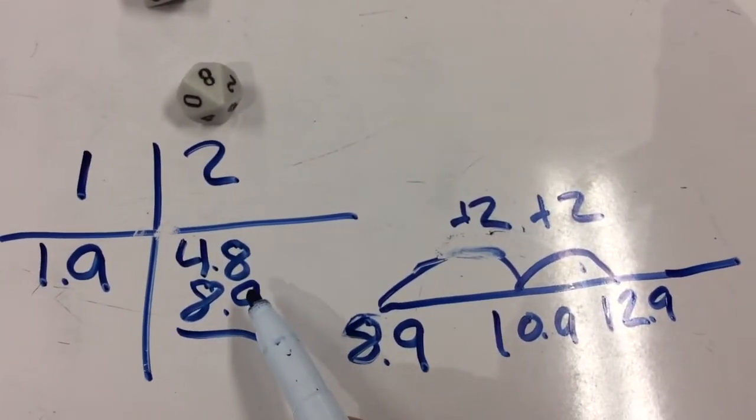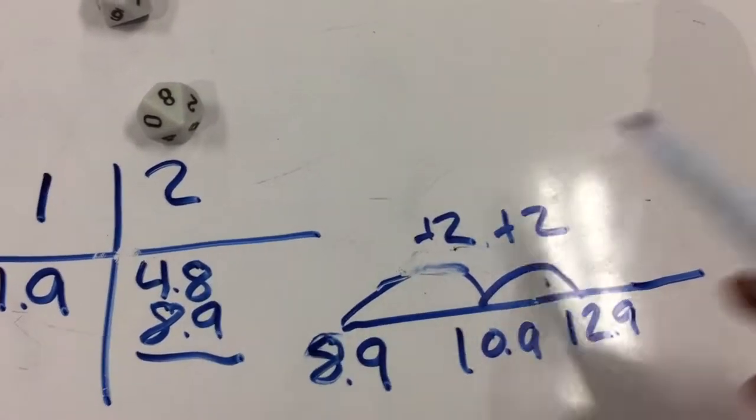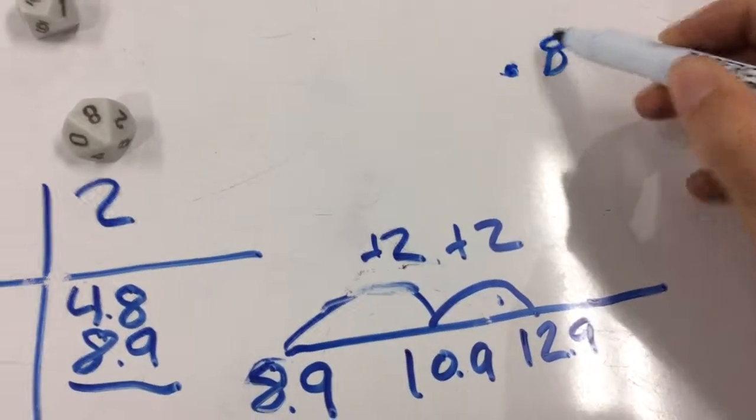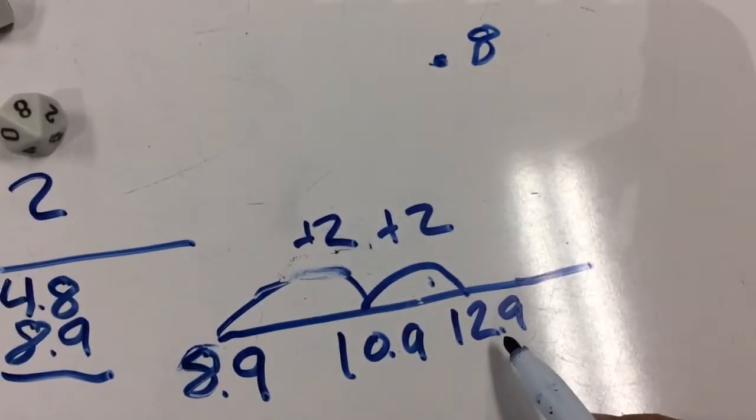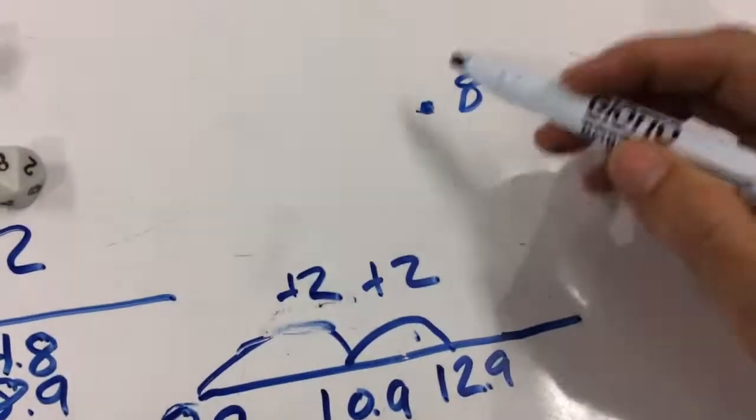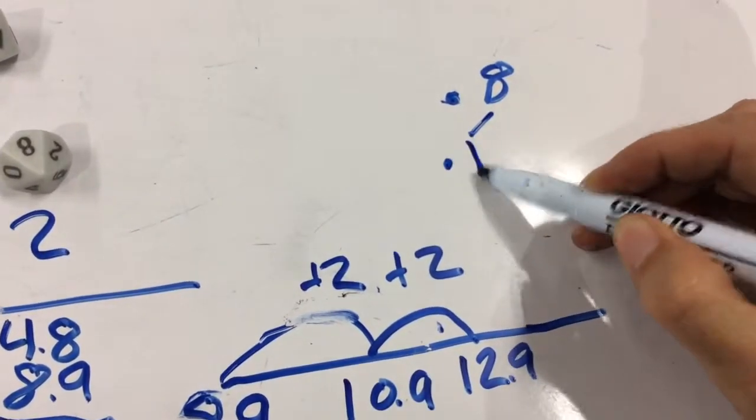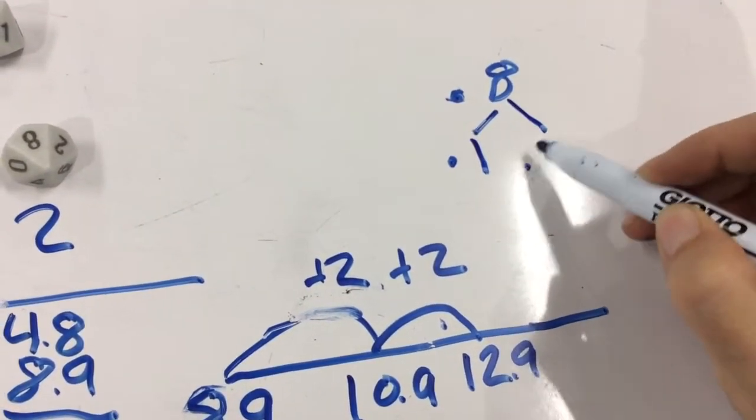And then we need to add that 0.8. So what I teach the kids with this is you look at how could you break it down easily so that you can get to the next whole number. So if you add 0.1 and then 0.7.